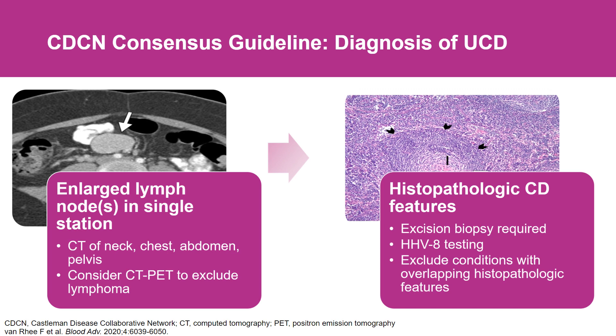If those histopathologic features are present, we would consider this patient to have unicentric Castleman disease — a single enlarged lymph node or regional lymph nodes with features consistent with Castleman disease.